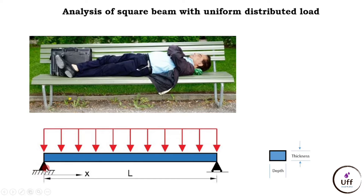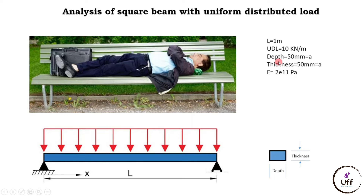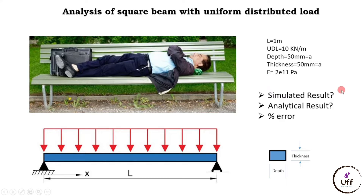I have considered a fixed support on the left end and a roller support on the other end. The length of this beam is capital L and it's a square beam, so depth and thickness are the same. For the simulation: length is 1 meter, uniform distributed load is 10 kilonewton per meter, depth and thickness are 50 mm, and Young's modulus is 2×10¹¹ Pascal.